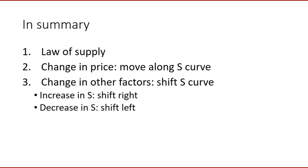In summary: the law of supply says there is a positive or direct relationship between price and quantity supplied — price goes up, quantity supplied goes up; price goes down, quantity supplied goes down. A price change causes movement along the supply curve, leaving the curve itself unchanged under ceteris paribus. But if we relax ceteris paribus and non-price factors change, the whole supply curve shifts — to the right for an increase in supply, to the left for a decrease.